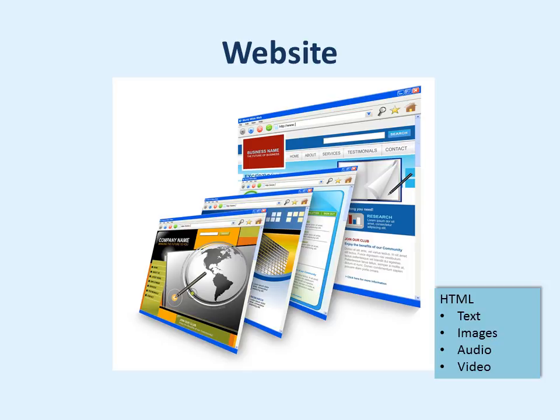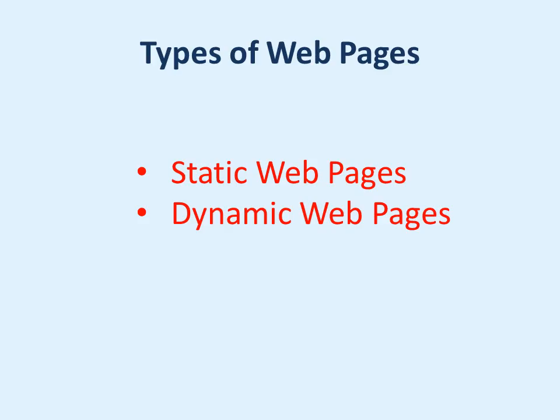Now let us go ahead and see what are the types of websites or web pages. There are two types of web pages: static web pages and dynamic web pages.